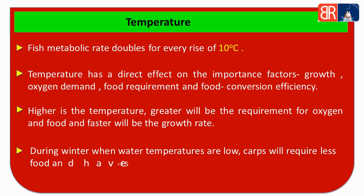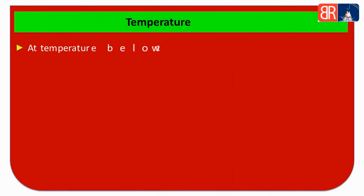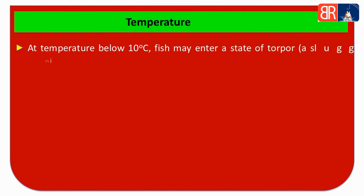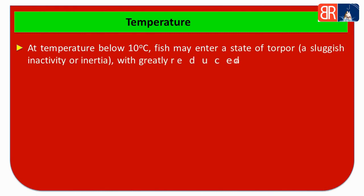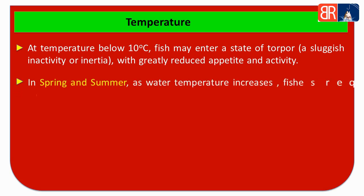The higher the temperature, the faster the fish's growth rate will be. During winter, when water temperature is low, our carp fishes will need less food, and the fish's growth rate will decrease. If temperature falls below 10 degree Celsius, the fish can enter a torpor state, which we can also call sluggishness or inactivity, with greatly reduced appetite and activity.